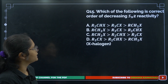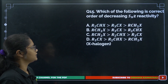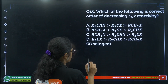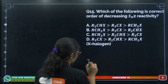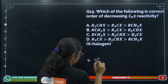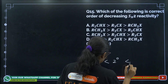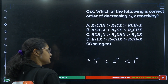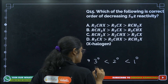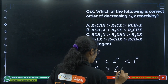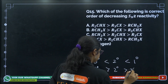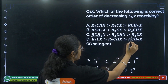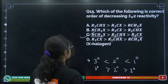Question 15: What is the correct order of decreasing SN2 reactivity? For SN2, primary reacts fastest. The decreasing order is primary > secondary > tertiary. You can see this is 1° > 2° > 3° — the answer is option number C.